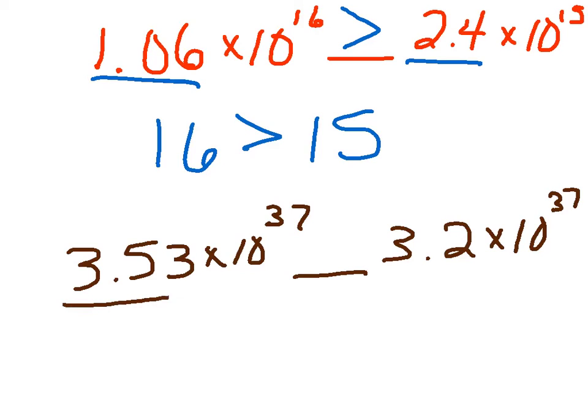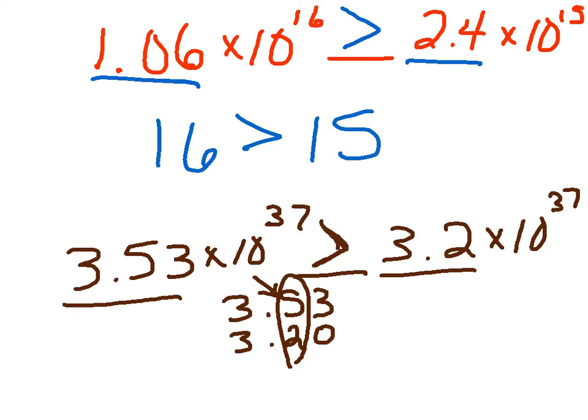Then you need to look at the numbers before this 10 to the 37th power. If I look at 3.53 and 3.2 and fill in my 0 there, I can see here that the 5 is greater than the 2, which means that this number here is greater than this number.